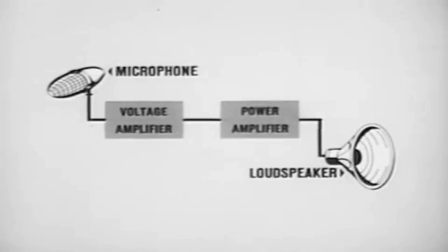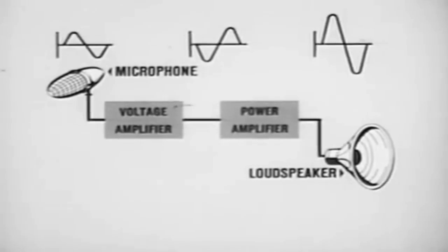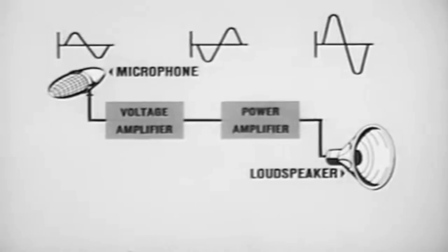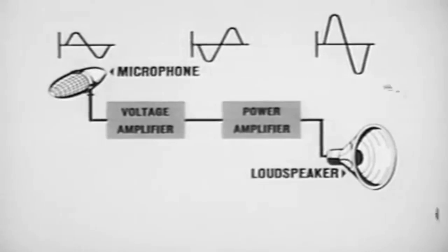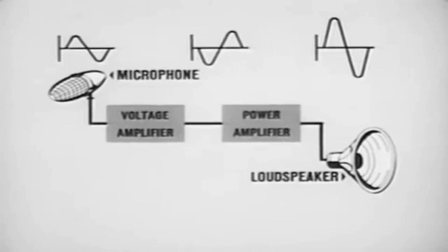For example, the output of a microphone must be amplified before it can produce an audible sound through a loudspeaker. A device used to accomplish this is a vacuum tube amplifier, which increases low energy to a higher level in an identical waveform, or as nearly identical as possible. Now let us examine a typical amplifier and in general terms see how this amplification is accomplished.